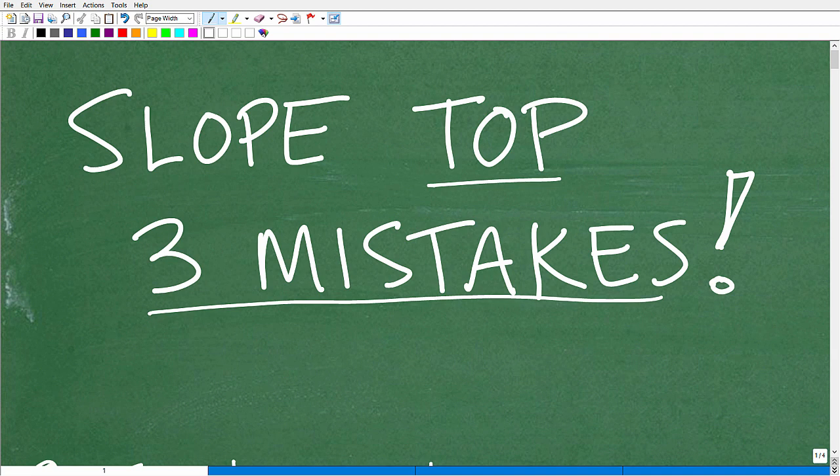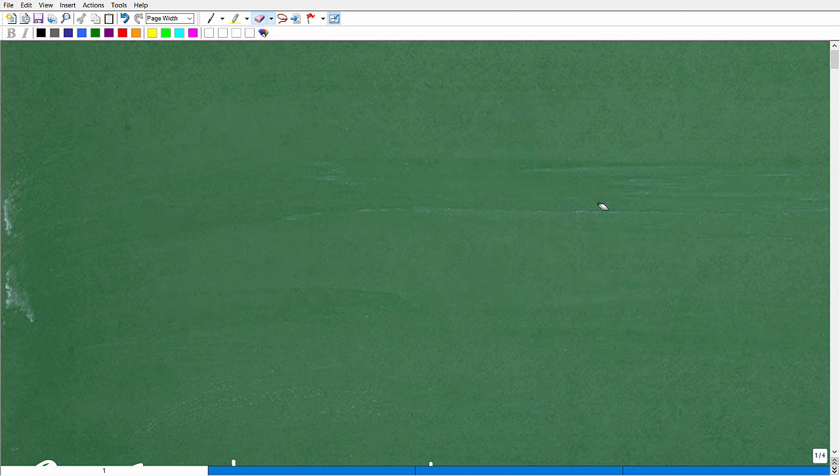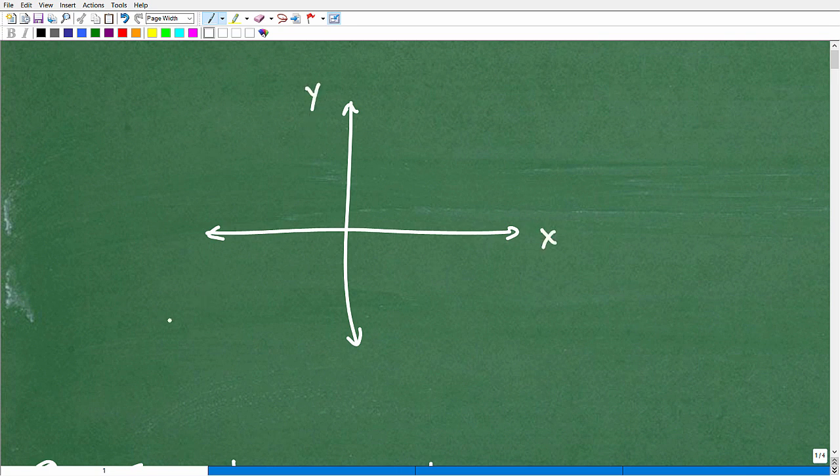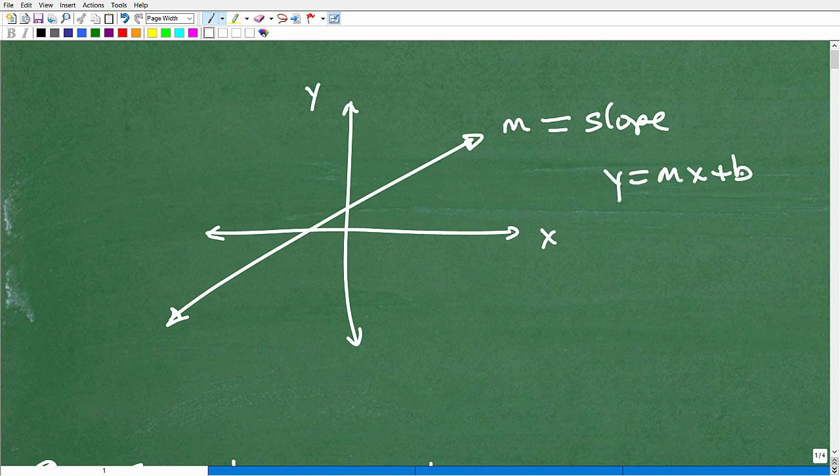Before I give you these three specific mistakes, let me give you the obvious mistake. The first thing is that students just don't even know what's going on. They're confused about what the slope is. So just real quick, the slope, what we're talking about is the slope of a line. Here's X, here's Y, and you have a line like so. This line has a particular slope, usually goes by the variable lowercase m.